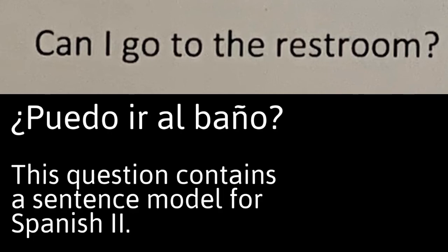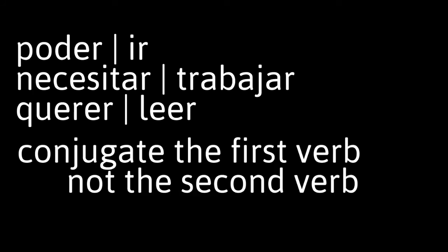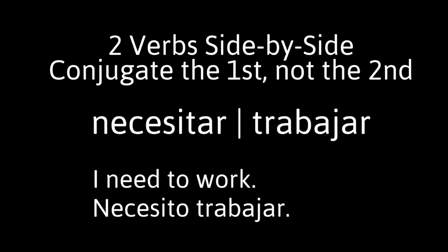Last thing I want you to notice here. In Spanish, we're going to be using verbs side by side in the same sentence. When you have two verbs that occur side by side, here's the rule — conjugate the first verb, not the second. Conjugate the first, not the second.